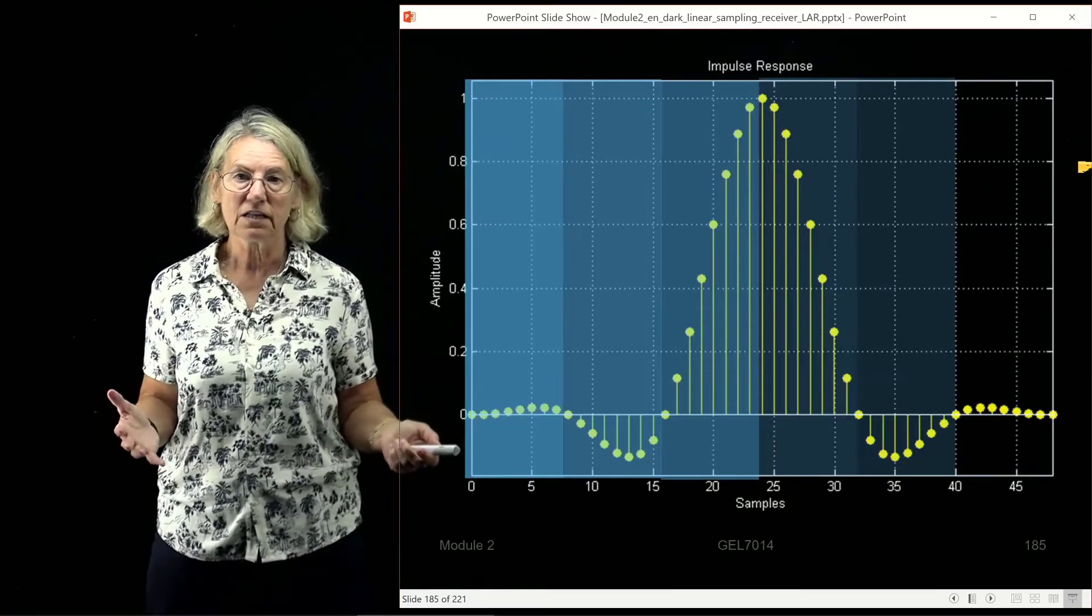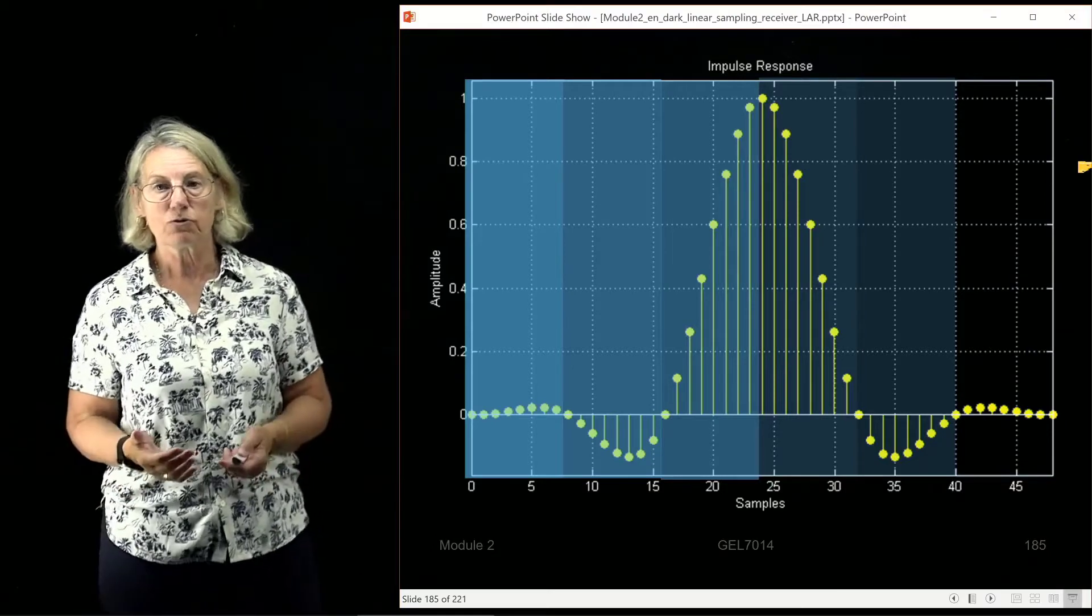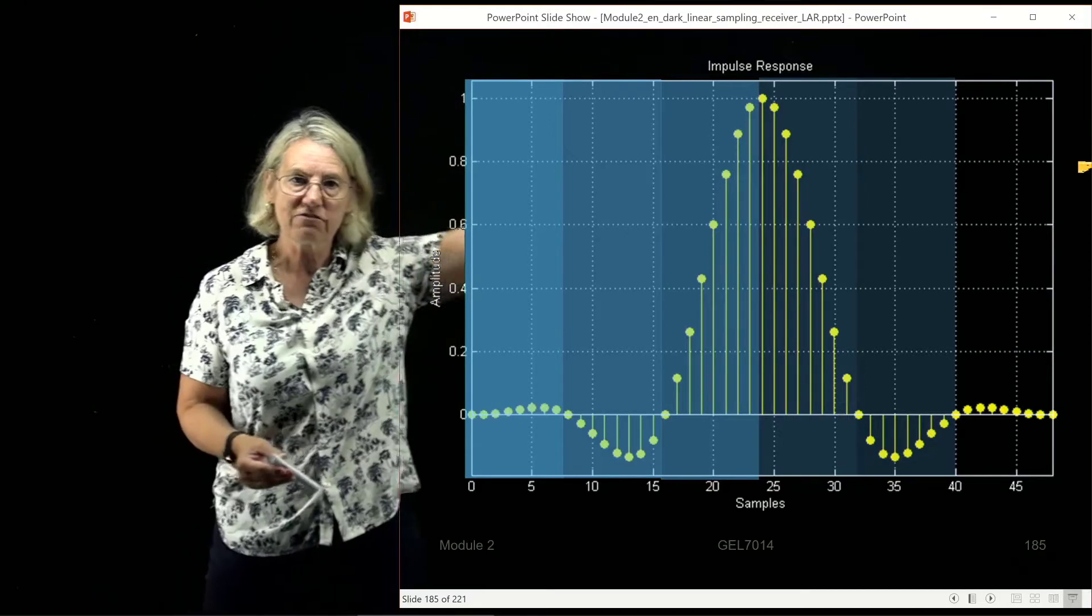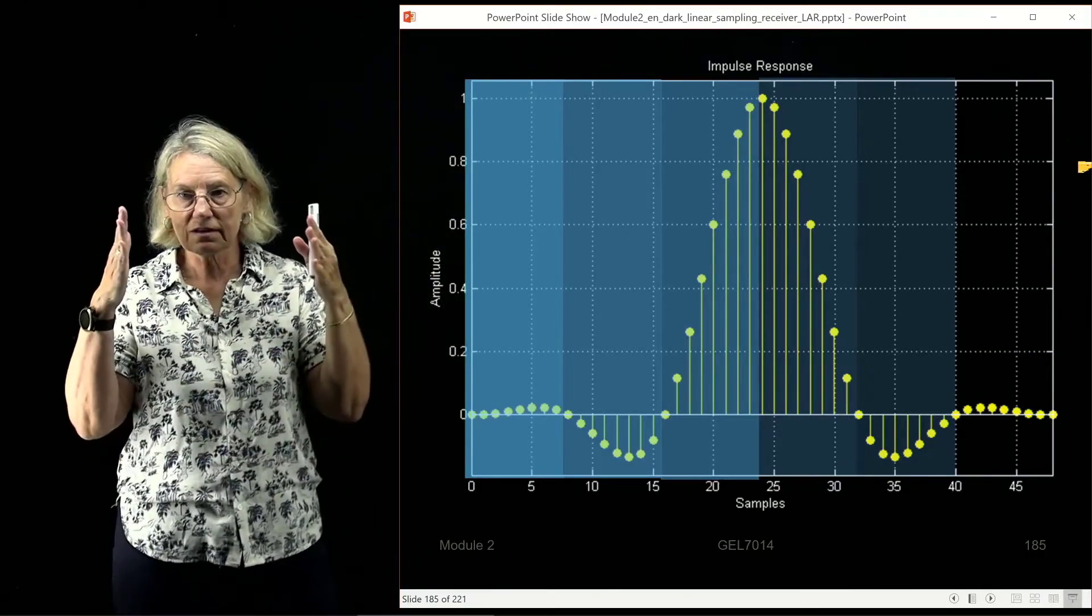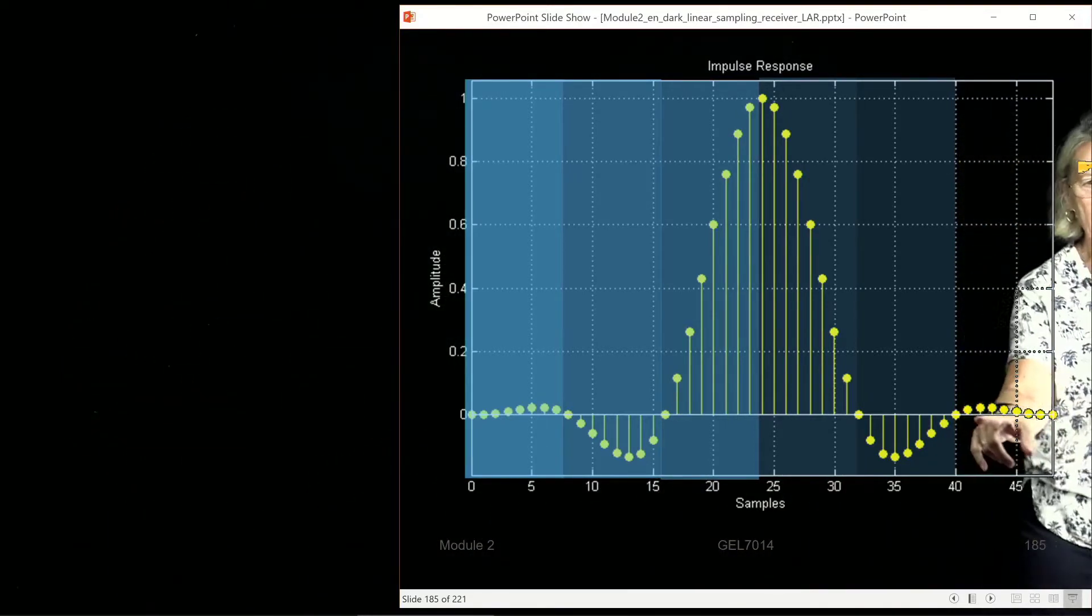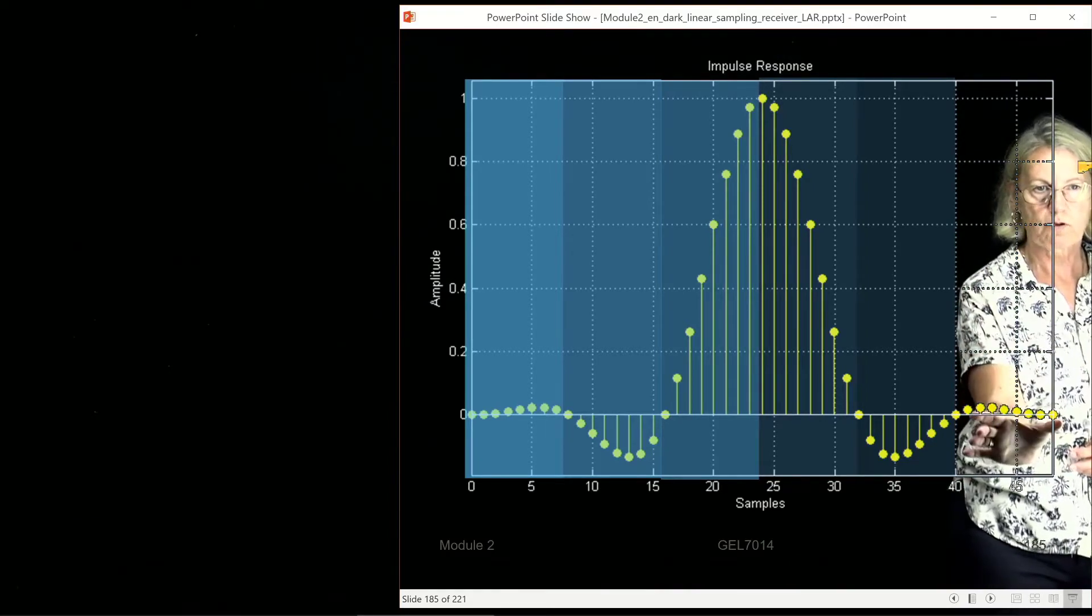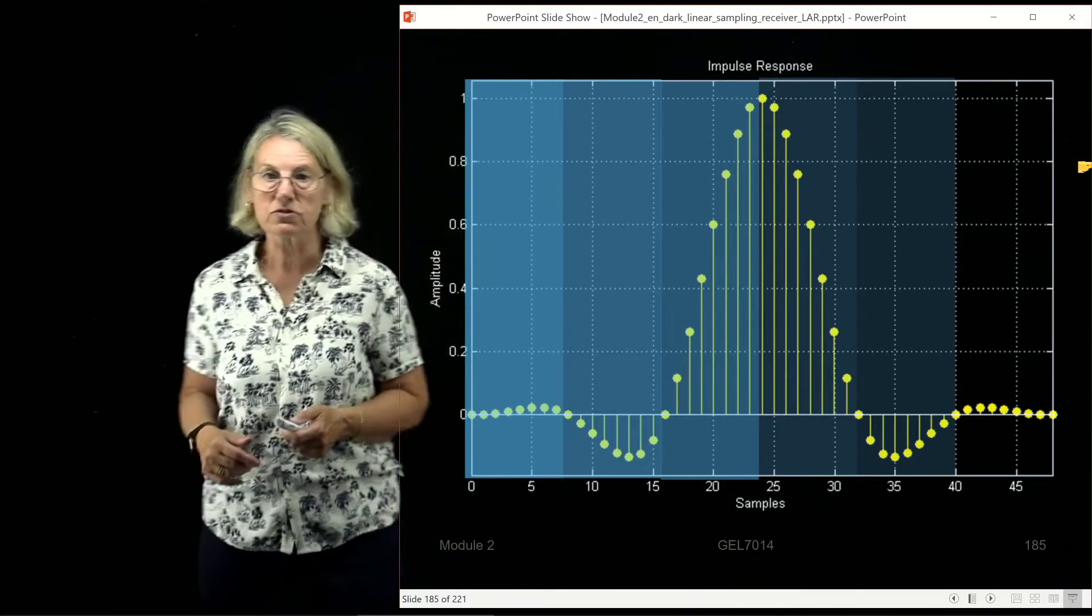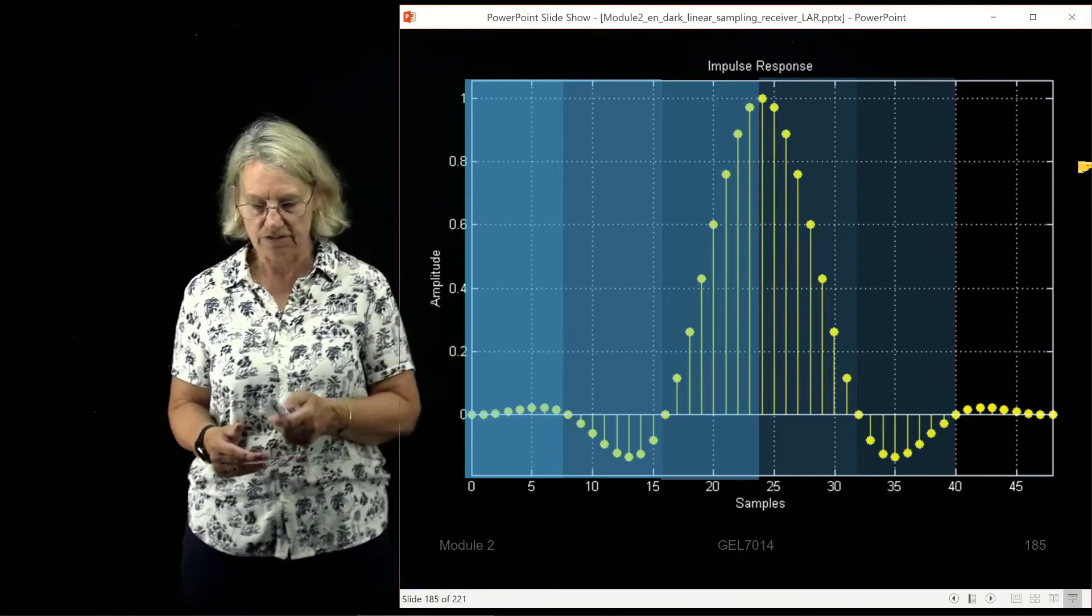So here I have the pulse shape, the filter shape that is used for generating this six support. So each shade of blue here shows a different symbol interval. And if we look at the last symbol interval here, I can point out for you that there are indeed eight samples in this symbol interval. And in each one of the other symbols intervals, there's also eight samples. So that represents the oversampling. And with this oversampling, of course, we get a good representation of the shape.